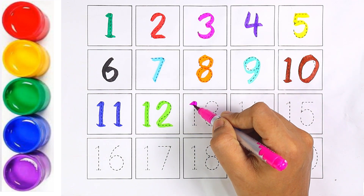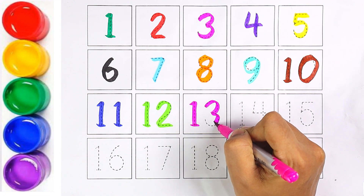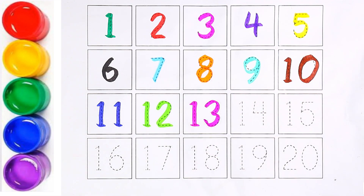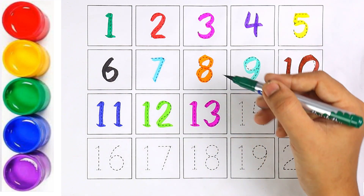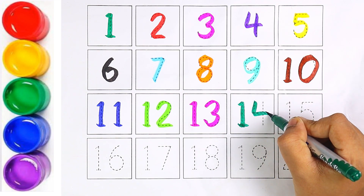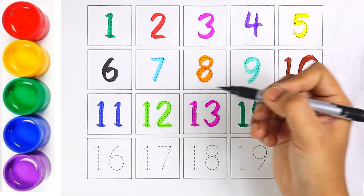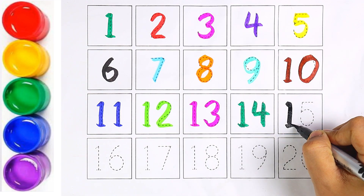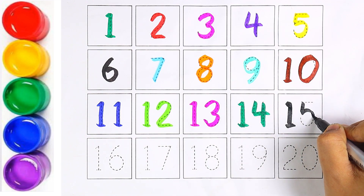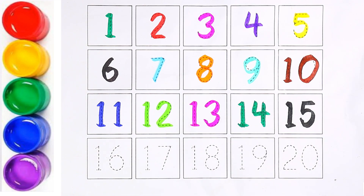Pink colour. Number thirteen. One and three makes the number thirteen. Green colour. Number fourteen. One and four makes the number fourteen. And black colour. Number fifteen. One and five makes the number fifteen.